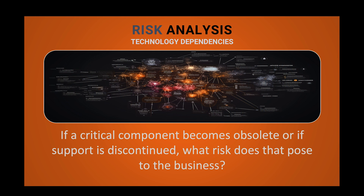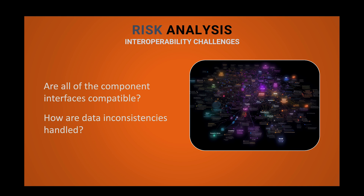Identify risks associated with dependencies on specific technologies, platforms, or vendors. Consider the potential impact if a critical technology component becomes obsolete, experiences compatibility issues, or if the vendor's support is discontinued. Mitigate these risks by diversifying technology options or establishing contingency plans. The integration of diverse systems and technologies may introduce risks related to interoperability. Identify potential risks such as data inconsistencies, communication failures, or incompatible interfaces between systems. Assess the impact of these risks on the overall architecture and plan for appropriate mitigation measures.